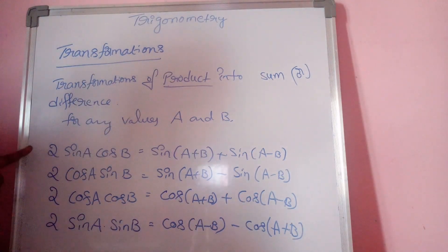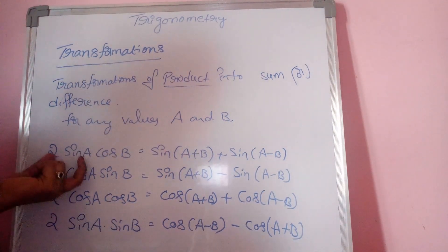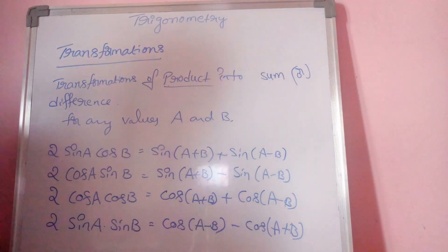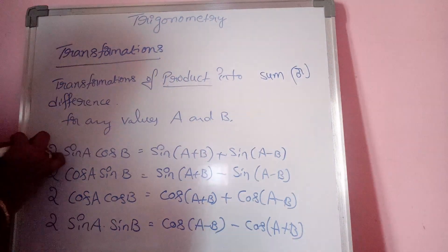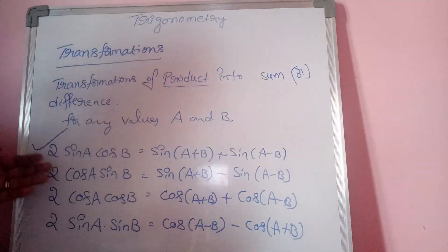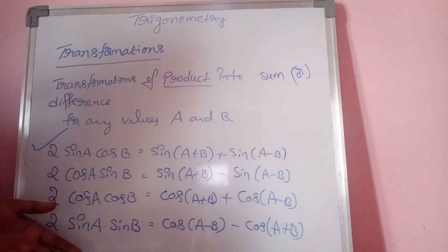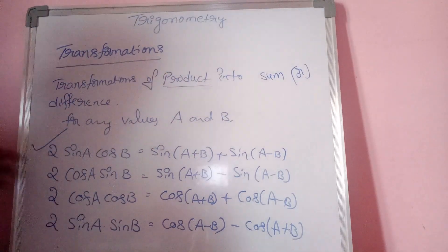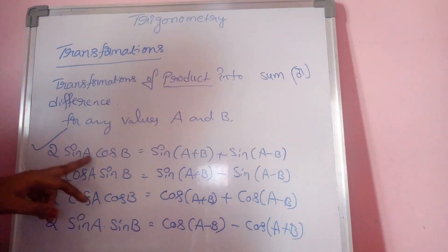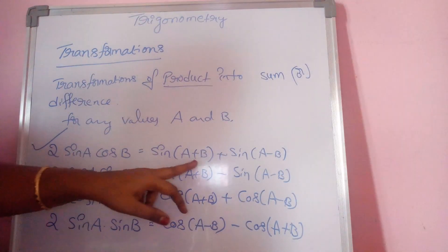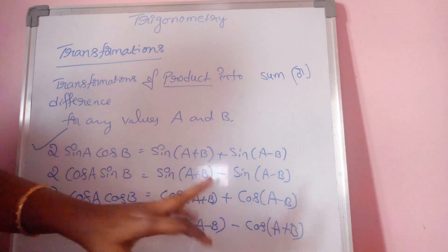Now let us see how to derive the first formula. We need to show that 2 sin A cos B is equal to sin(A+B) plus sin(A−B). We start by considering sin(A+B) plus sin(A−B) and expanding each using the known compound angle formulas.